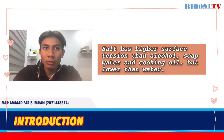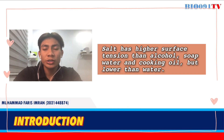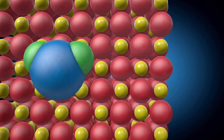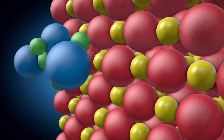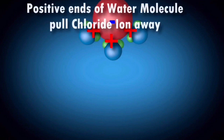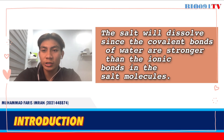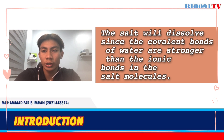Salt has higher surface tension than alcohol, as well as cooking oil, but lower than water. This is because when salt is dissolved in water, the chloride ion becomes negatively charged and the sodium ion is positively charged. Salt will dissolve since the covalent bonds of water are stronger than the ionic bonds in the salt molecules.